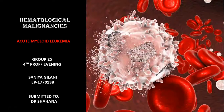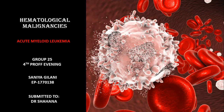Assalamualaikum, my name is Sanya Glani and my roll number is EP 1770138. The topic of our group presentation is hematological malignancies, and my sub-topic is acute myeloid leukemia. Before going to the case study, I will first give some introduction about acute leukemia and hematopoietic stem cells.